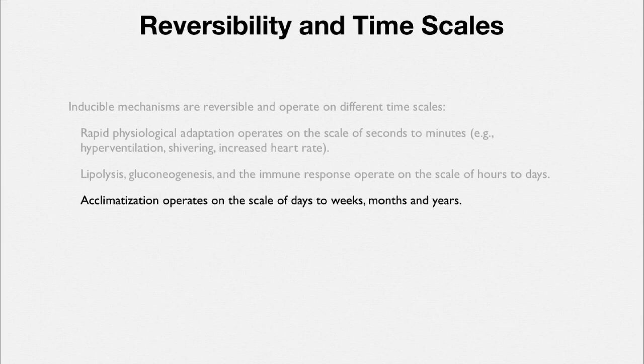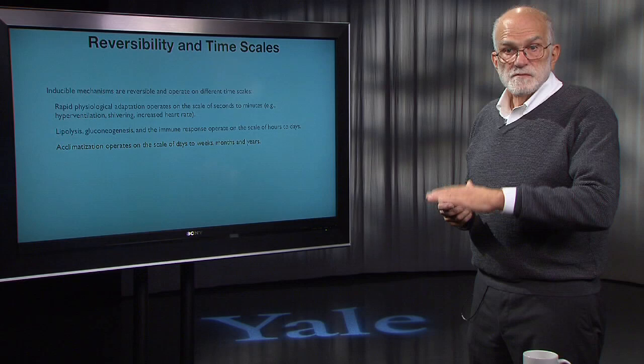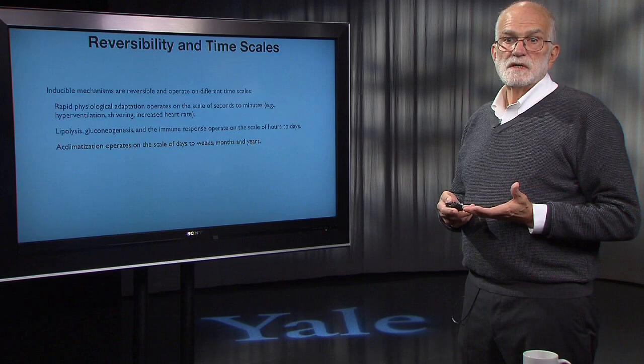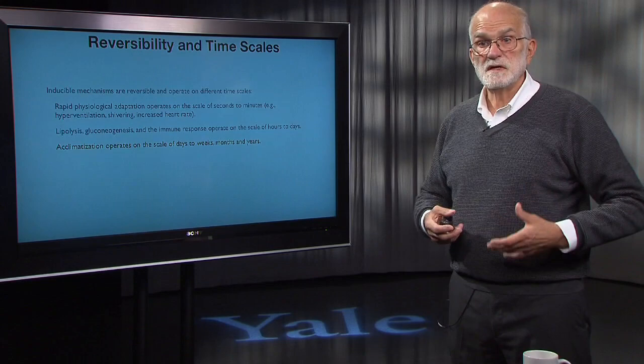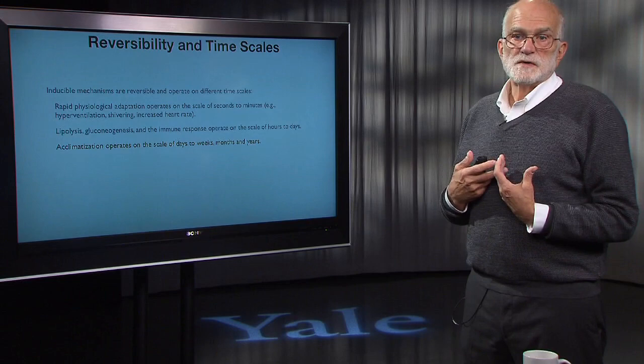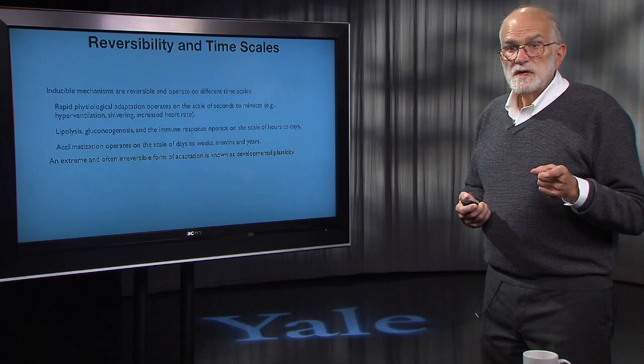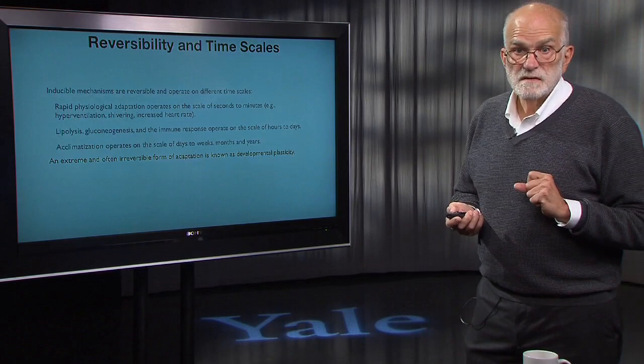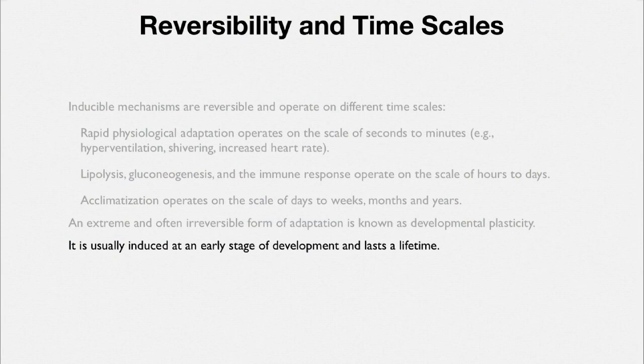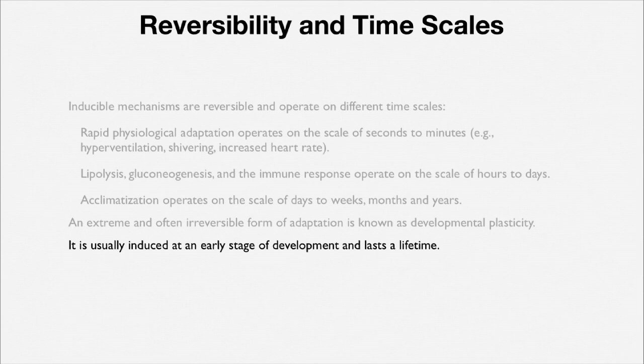As people move up into Tibet or into the Altiplano in Peru, going from sea level to high altitude, changes accumulate in their bodies over years. People living continuously at 15,000 feet have enormous ribcages and huge blood volume and respiratory capacity — but it takes a long time to build that up. An extreme and often irreversible form of adaptation is developmental plasticity, induced at an early stage and lasting a lifetime, such as age and size at maturity — maturation happens once and fixes body size with many lifelong consequences.